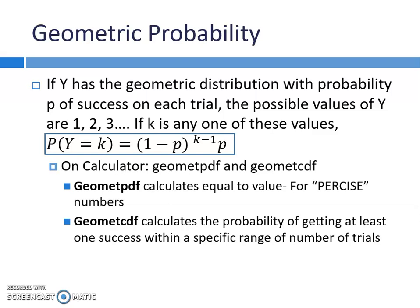Formulas. If Y has a geometric distribution with a probability of P success on each trial, the possible values of Y are 1, 2, 3, and so on — so binomial could be values 0 through N, whereas geometric could be values 1 through infinity. Unfortunately, this formula is not on your formula sheet, but it's not a super intense formula — it's kind of intuitive. You can also calculate this on your calculator, just like in the last section. We have PDF and CDF: P is for a precise value, C is for getting at least one success within a specific range, like that value or less.